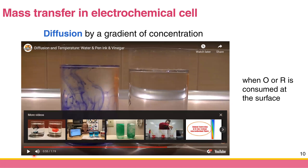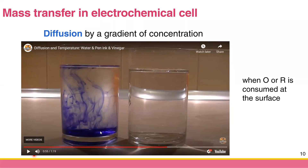They also put it in vinegar, which can vanish the color of the ink. You can see that because of the concentration difference, diffusion occurs. In electrochemical cells, diffusion occurs when the oxidized or reduced species is consumed at the electrode surface. For example, if you want to reduce O to R, you apply a negative potential, and O is consumed at the surface, so more O must diffuse to the surface.